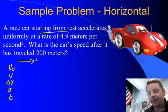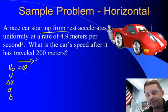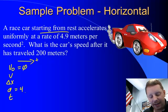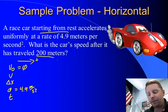Now, v-naught, if it starts from rest, must be zero. It accelerates at 4.9 meters per second squared, that's a. And we want to know its speed after it has traveled 200 meters. There's our delta x, our displacement.